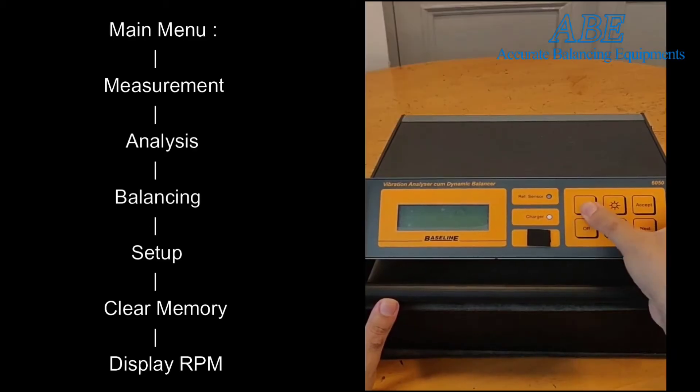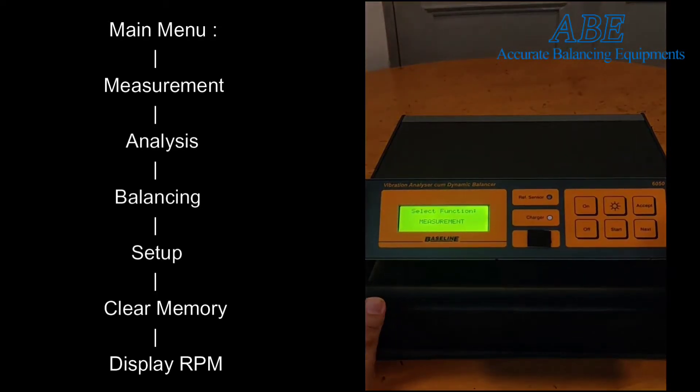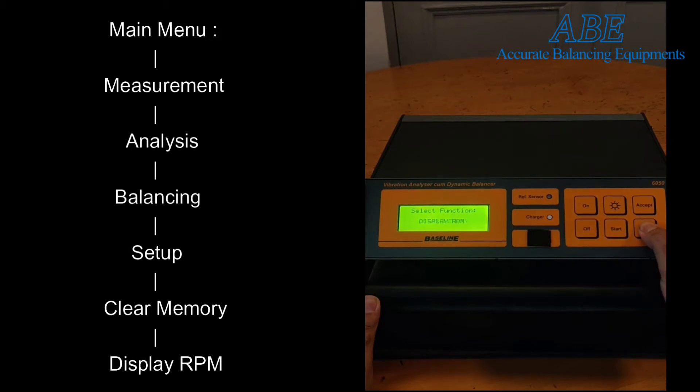The unit can be switched on by pressing the on button. A battery bar is presented at this time. The user can press the glow button to enable the backlight of the display. The instrument starts up at the main menu with the following options: measurement, analysis, balancing, setup, clear memory, display, and RPM.